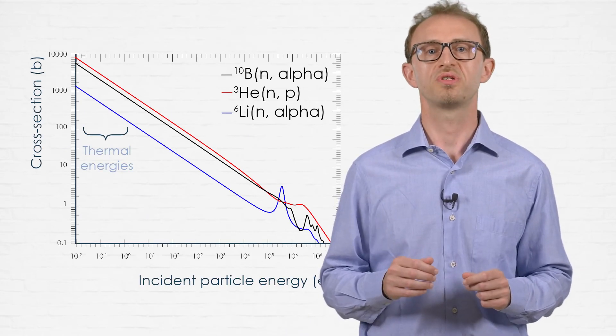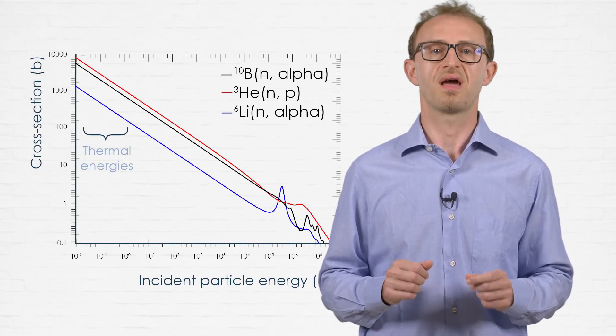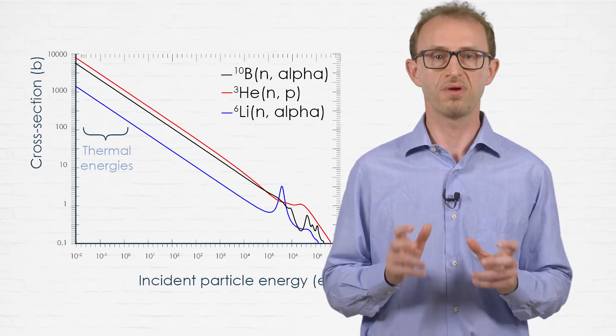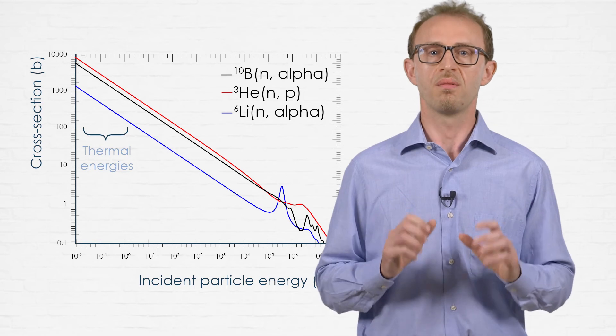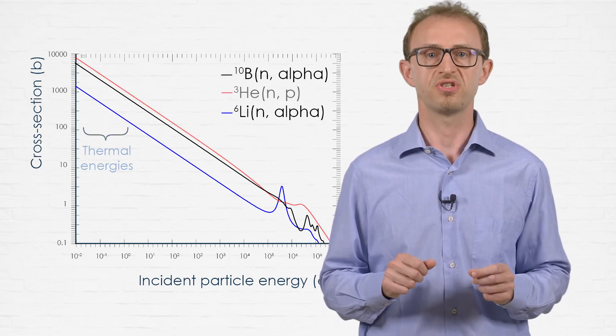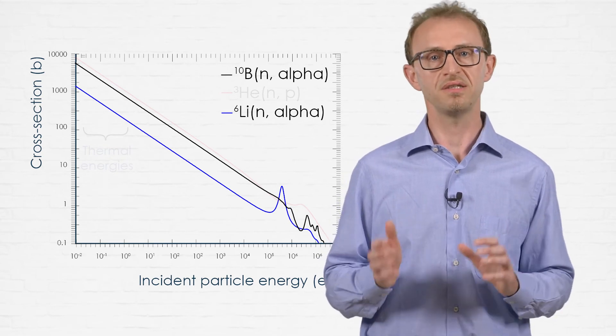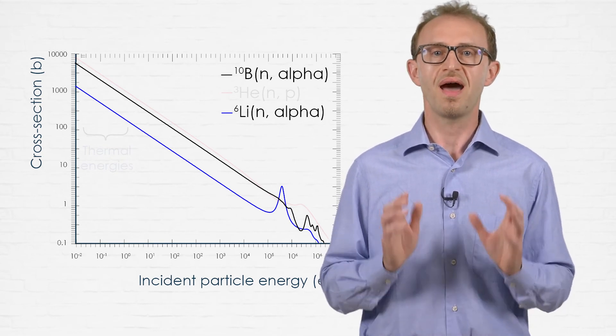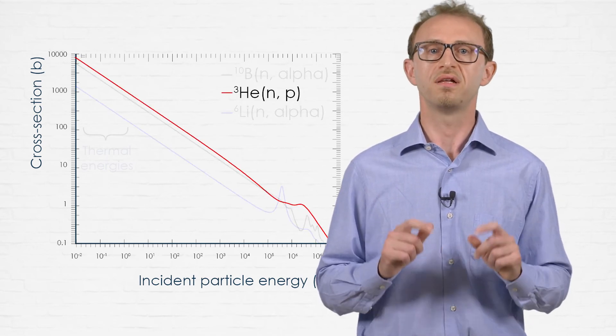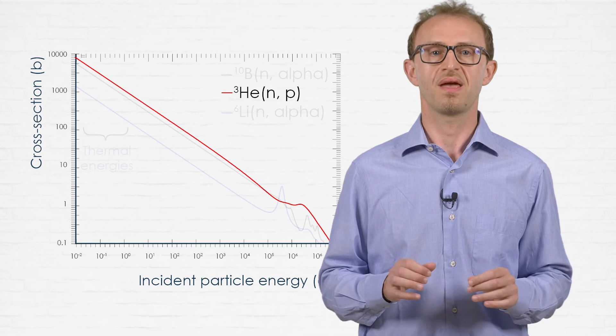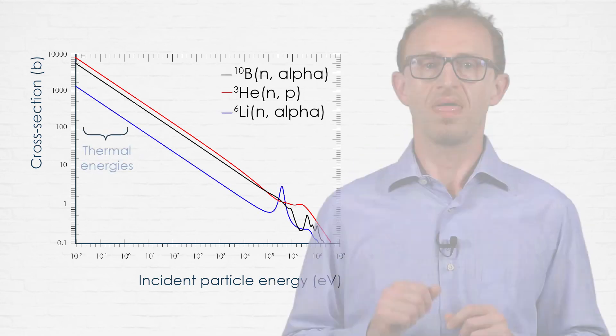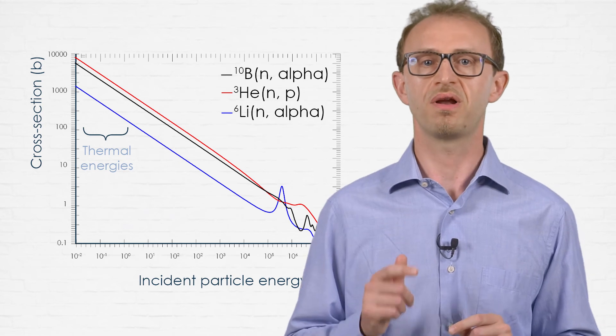Well, the experimental evidence shows that these conditions are met by some neutron capture reactions at thermal energies. More specifically, we nowadays know that at thermal energies the nuclei boron-10 and lithium-6 have a high cross-section for N-α reactions,